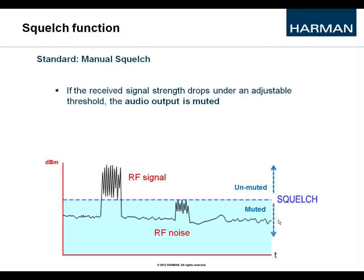Squelch function: since the receiver cannot distinguish between the noise floor and the desired signal, it would also route the noise to the audio output where it would annoyingly be heard. To prevent that, there is a circuitry built into the receiver called squelch, which works kind of like a noise gate. A threshold is set to a certain level where all signals strong enough to lie above the threshold pass through to the audio output.